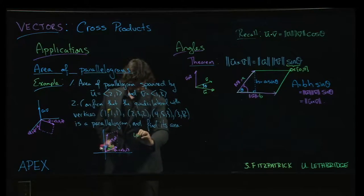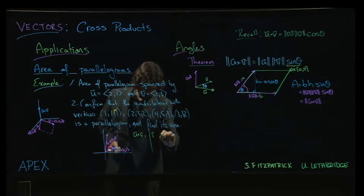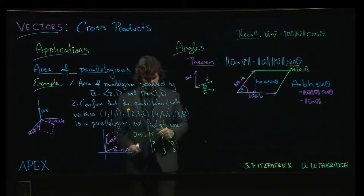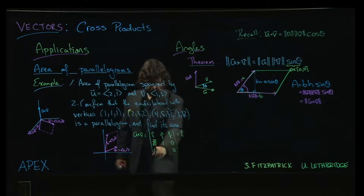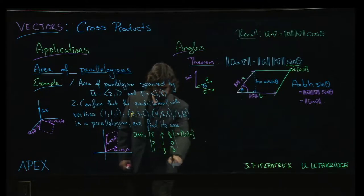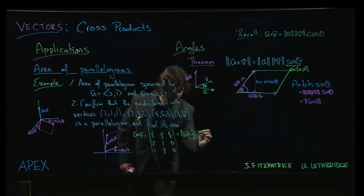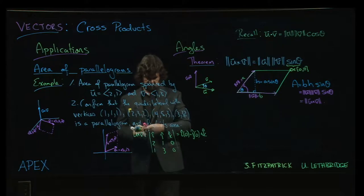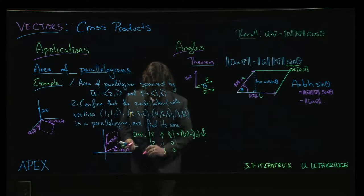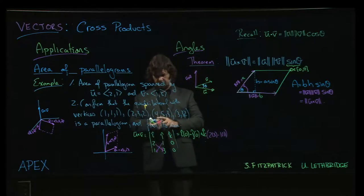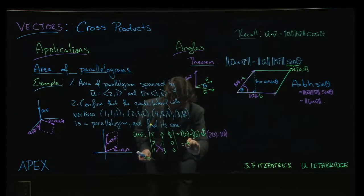If I take the cross product u cross v, I set up the determinant with i, j, k in the first row, then (2,1,0), then (1,3,0). That column of zeros means when we do i and cover up this column, I have 1 times 0, 0 times 3, so I just get 0i. When I do j, I cover up the middle column: 2 times 0, 0 times 1, so I get no j part either. And then I do k, and there I actually finally get something. I get 2 times 3 minus 1 times 1, which is just 5. So I get 5k.